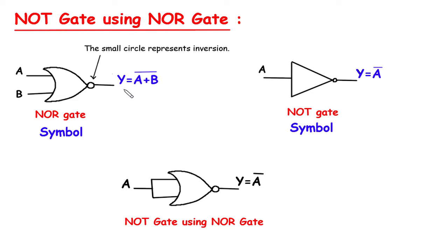The Boolean expression for NOR gate is Y equals A plus B whole bar.